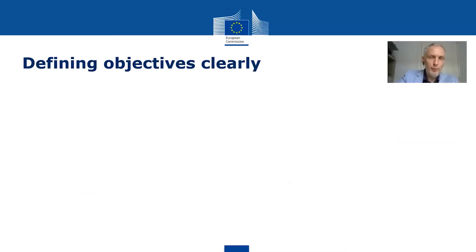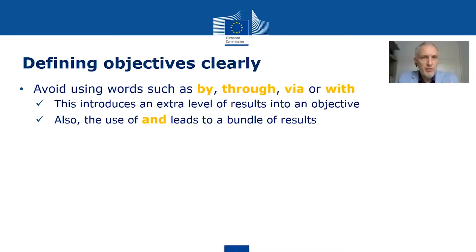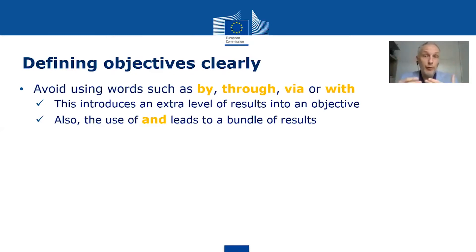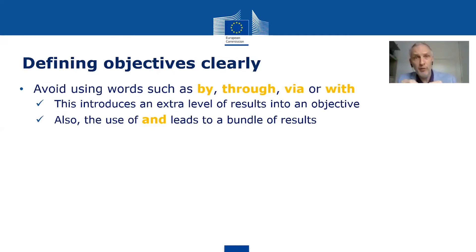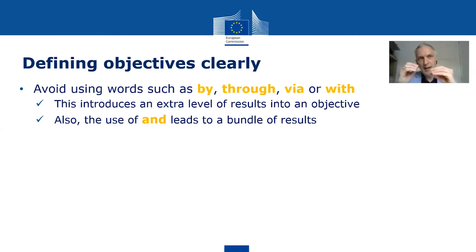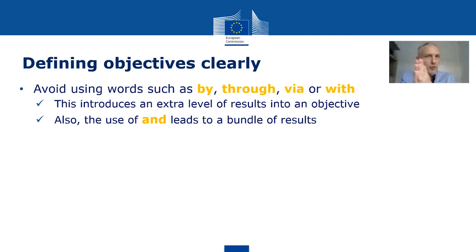It's very important how you formulate, and the general rule is we should avoid words that run the risk of combining levels — like 'by,' 'through,' 'via,' or 'with.' You see those a lot, and they complicate matters because they introduce an extra level in one result. If you're trying to build the intervention logic diagram with individual elements that are in fact several elements, then you link to part of that but not to another part.